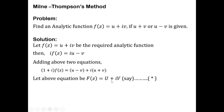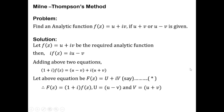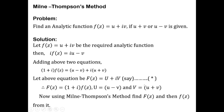We let this function as Capital F(z) = Capital U + i·Capital V. From this assumption, Capital F(z) = (1 + i)·f(z), where Capital U = u - v and Capital V = u + v. Using the Milne-Thomson method, we first find Capital F(z) whenever u - v (Capital U) or u + v (Capital V) is given, and then find small f(z) using the relation between Capital F(z) and small f(z).